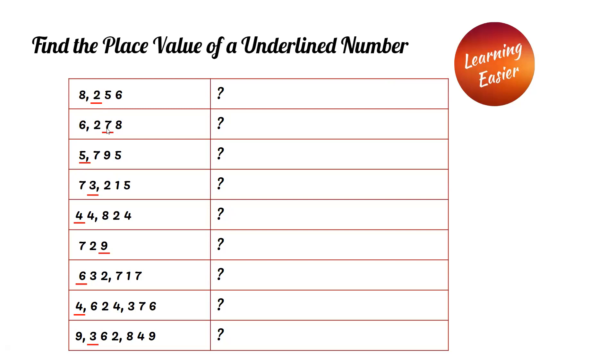6,278. The seven in the tens place is underlined, so the answer is seven tens. 5,795. The five in the thousands place is underlined, so the answer is five thousands.